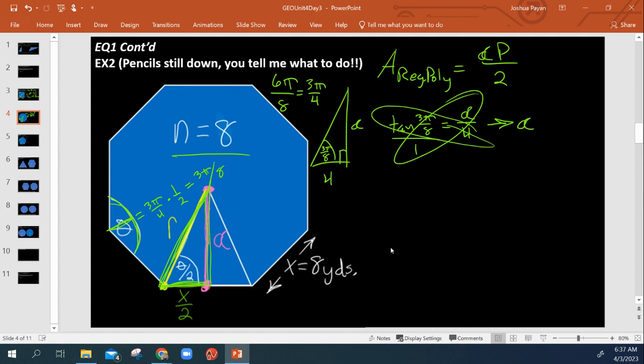So alpha times 1 is alpha. 4 times tangent 3 pi over 8 is just 4 times tangent 3 pi over 8. And there we have it.